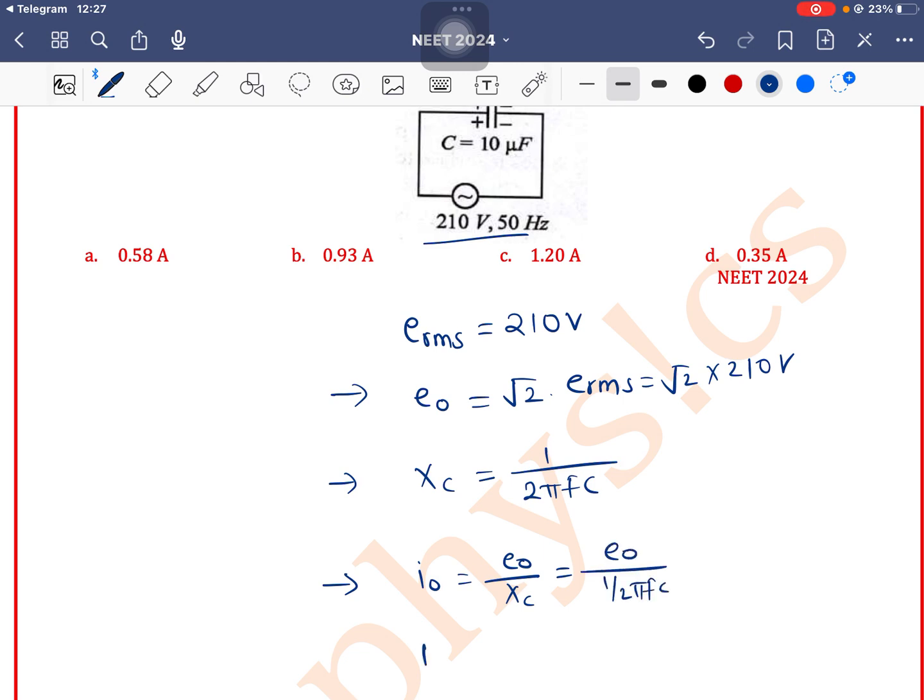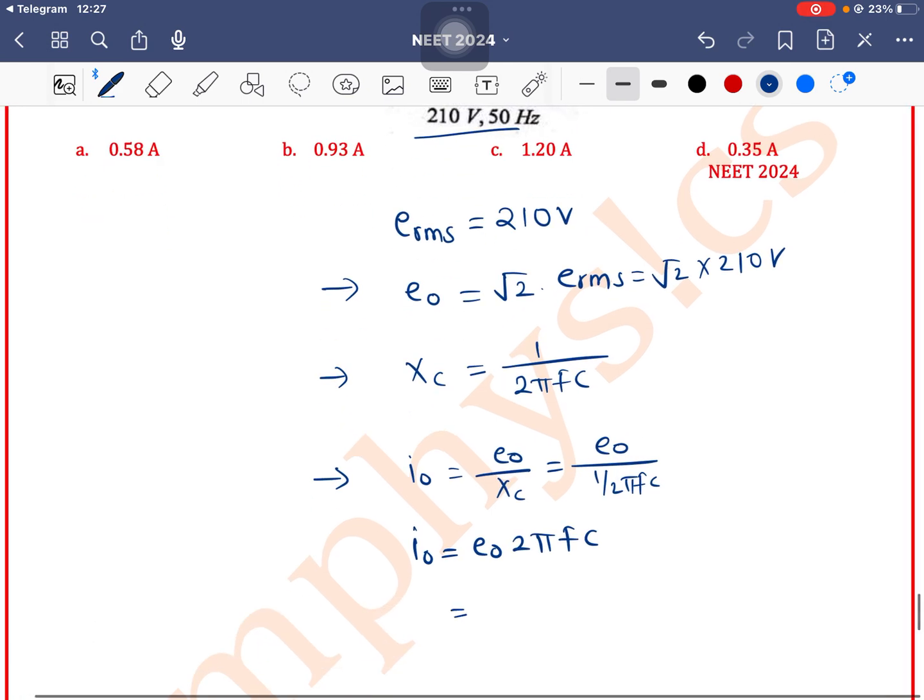The formula for I0 is E0 into 2 pi fc. What is the value of E0?